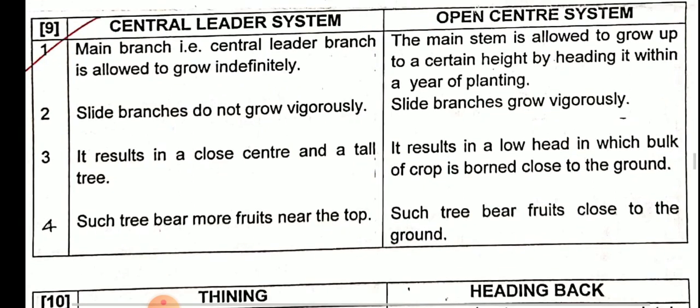Third point: in the central leader system, it results in a closed center and a tall tree, because only the main branch is grown. There are many branches at the center, so it is called a closed center. In the open center system, it results in a low-height tree in which the bulk of the crop is born close to the ground, because the main branch is cut back.